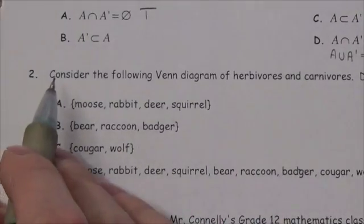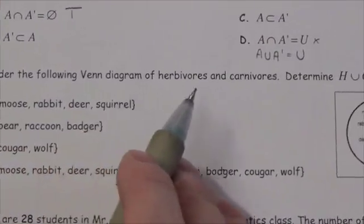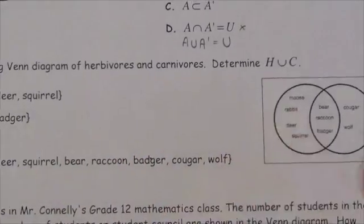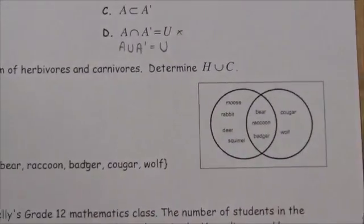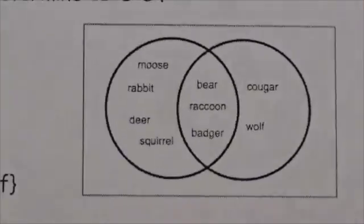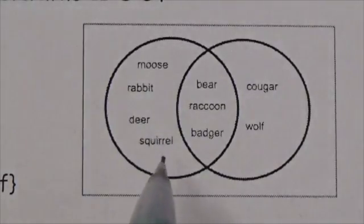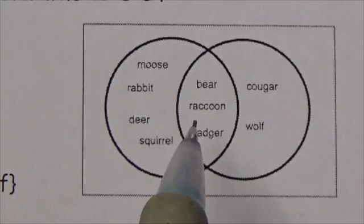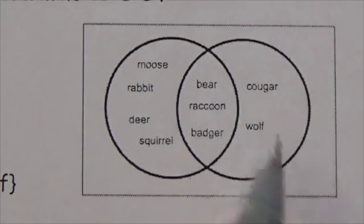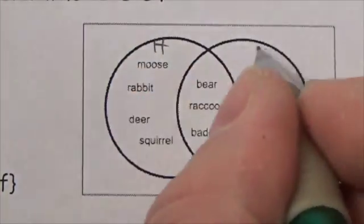The question says: consider the following Venn diagram of herbivores and carnivores and determine H union C. Let's take a quick look — moose, rabbit, deer, squirrel, bear, raccoon, badger, cougar, wolf. So we've got our herbivores and our carnivores.